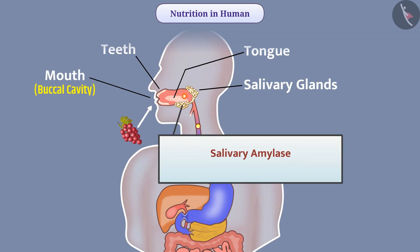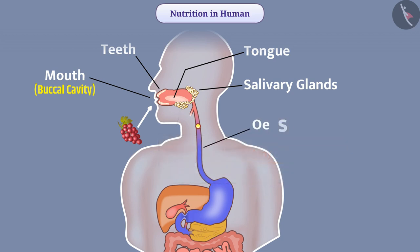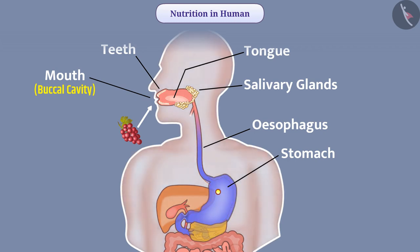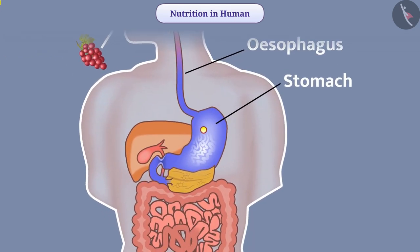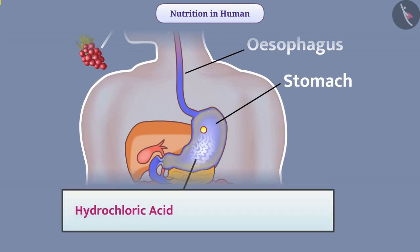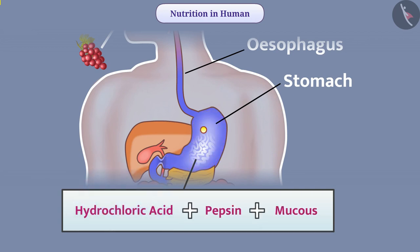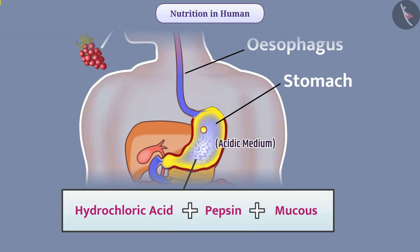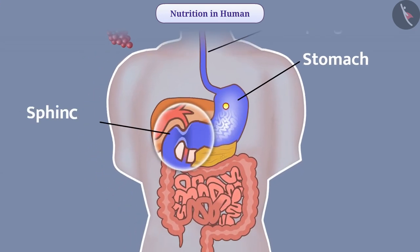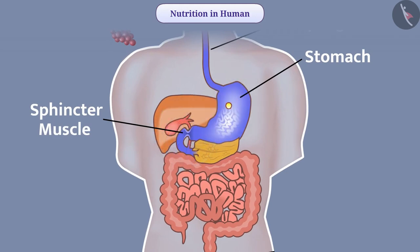Saliva contains an enzyme called salivary amylase, which breaks the complex molecule starch into simple sugar. After this, the esophagus passes the food from the mouth to the stomach. When food enters the stomach, it expands. Gastric glands present in the wall of the stomach secrete hydrochloric acid, protein-digesting enzyme pepsin, and mucus. Hydrochloric acid creates an acidic medium and the enzyme pepsin works in that acidic medium. The mucus protects the inner lining of the stomach from acid. The sphincter muscle in the stomach regulates the release of acidic food, due to which food from the stomach reaches the intestine.